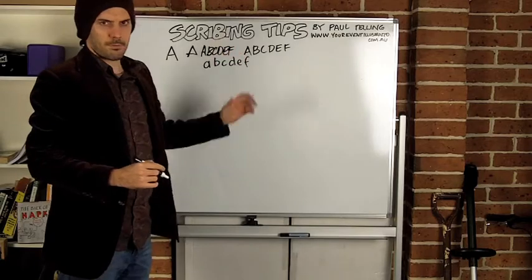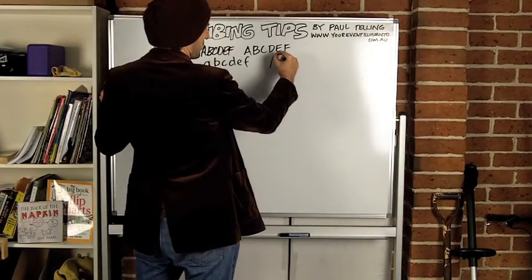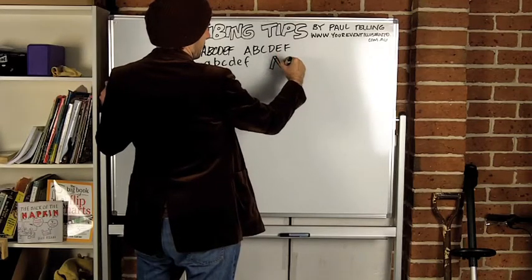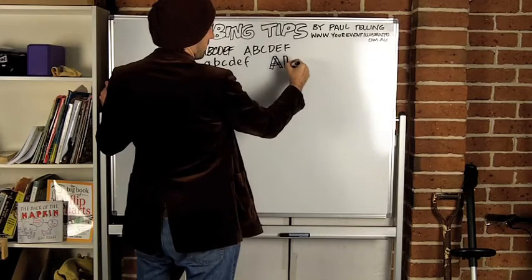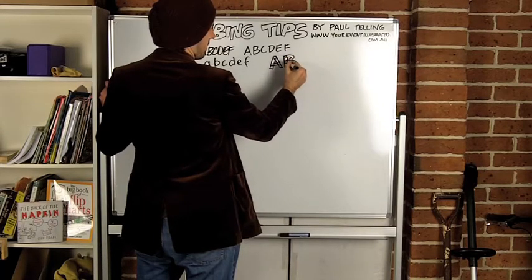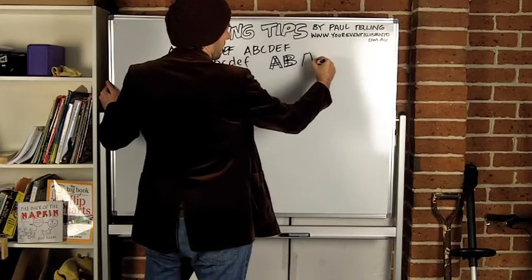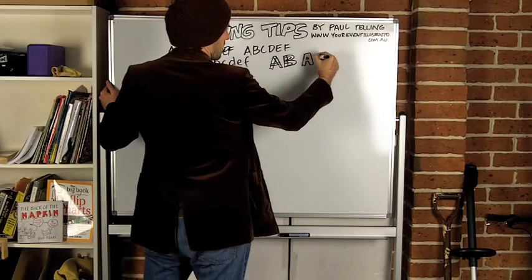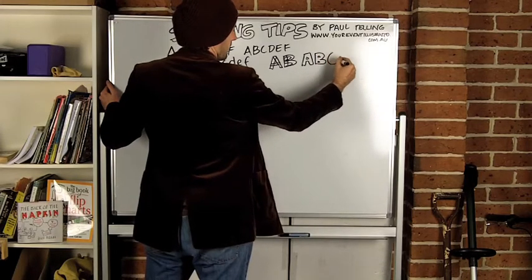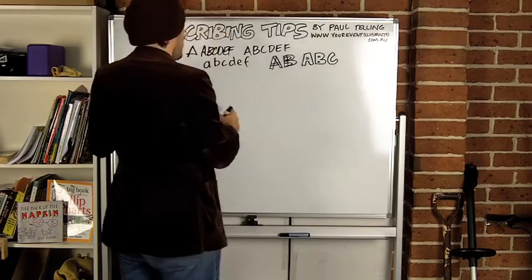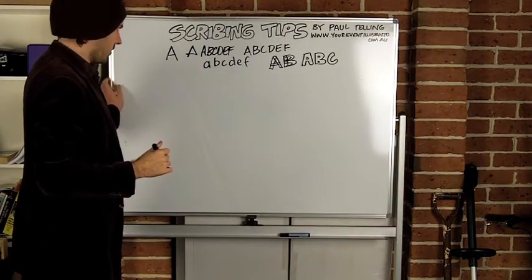So basic lettering. To do block lettering again break it down into the simple strokes and build your letters up. Like so. Which ends up being if you just imagine the outer edge of those two objects. So really you're just thickening up your current letters. So that's lettering.